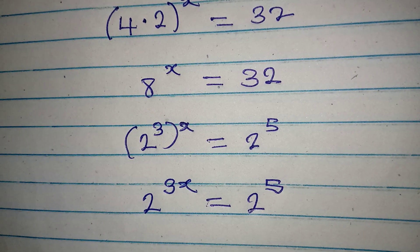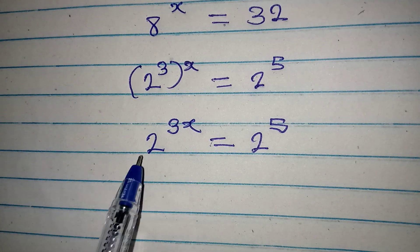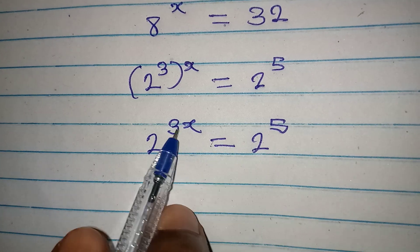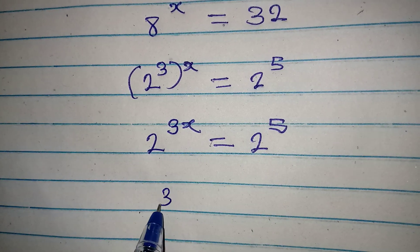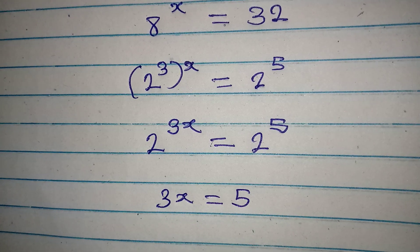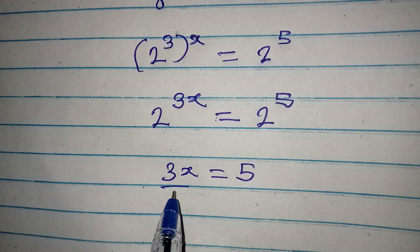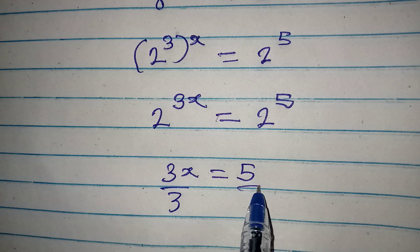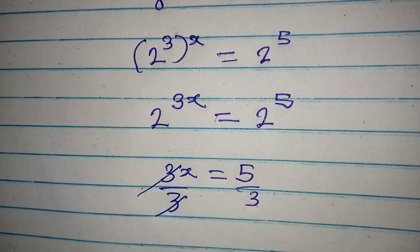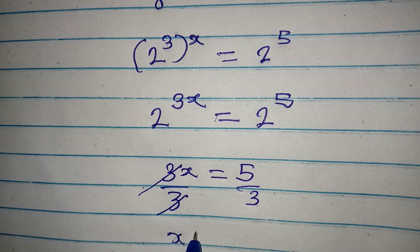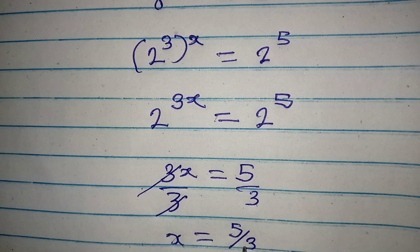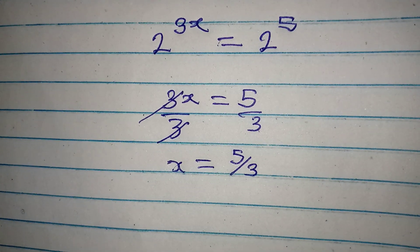Since the bases are the same, we equate the exponents: 3x equals 5. Dividing both sides by 3, we get x equals 5 over 3.